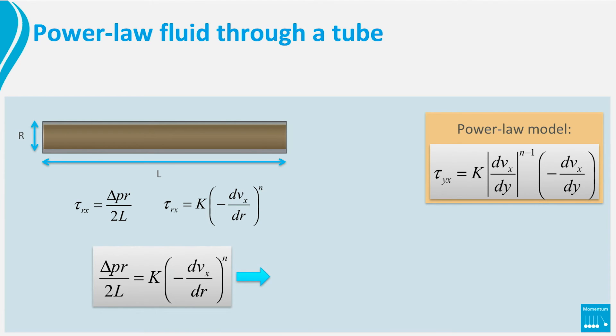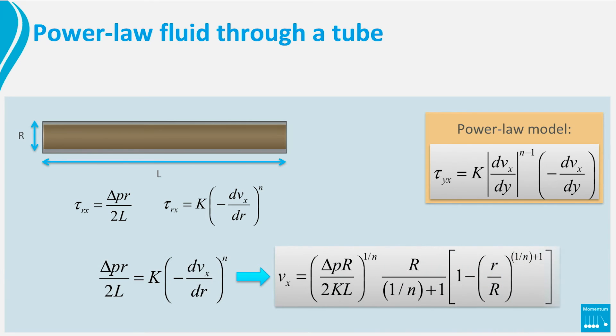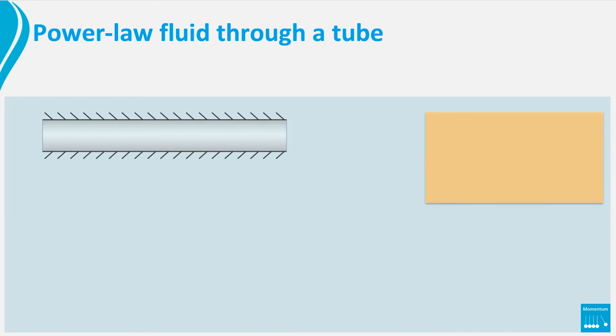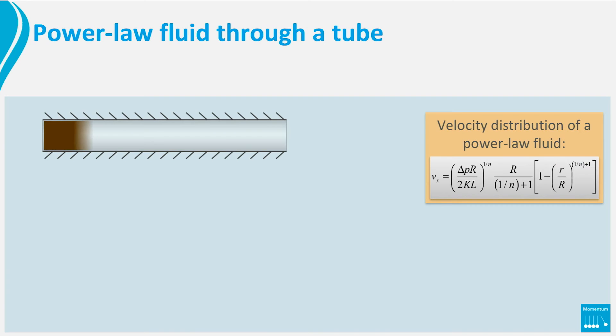we obtain the velocity distribution of a power-law fluid. If we compare this distribution with the parabolic profile of a Newtonian fluid, we see that for a power-law fluid with n smaller than 1, the distribution is much flatter.